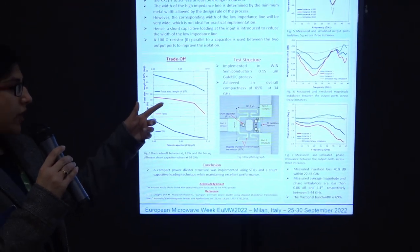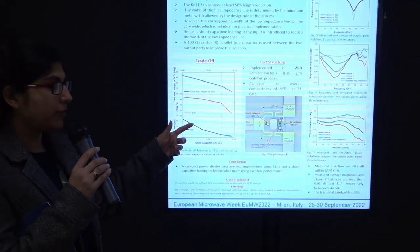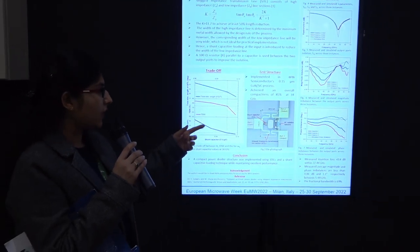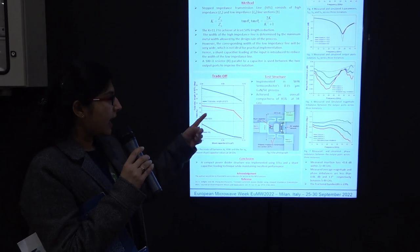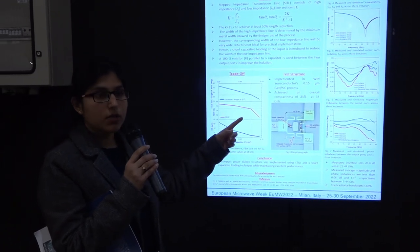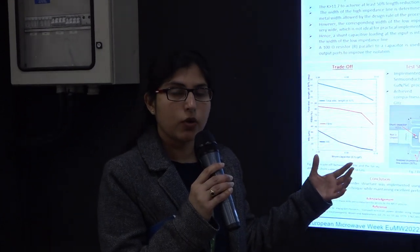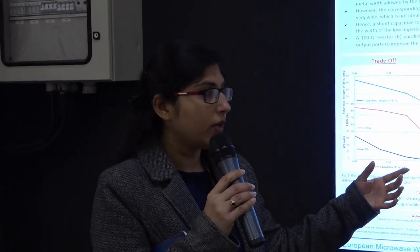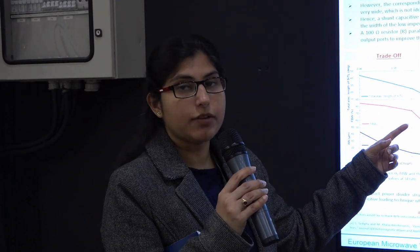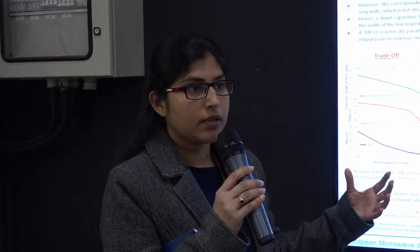In this graph, we are showing the tradeoff between the compactness you can get and the fractional bandwidth. The shunt capacitance does help with compactness of the overall power divider, however it limits the fractional bandwidth. So there's a tradeoff and you have to select the capacitance wisely.